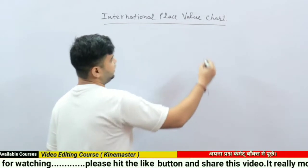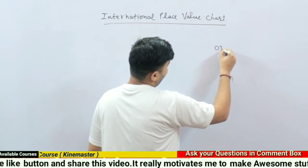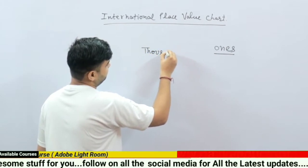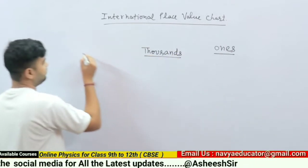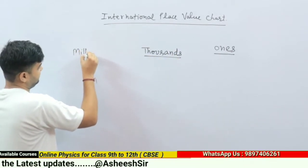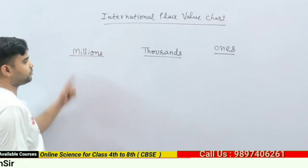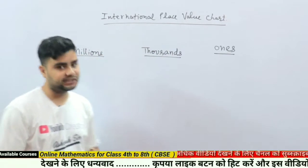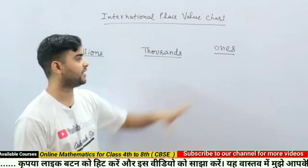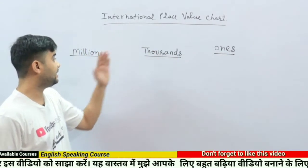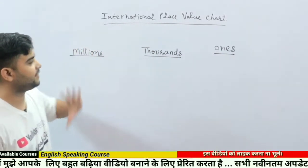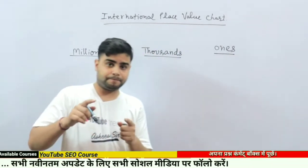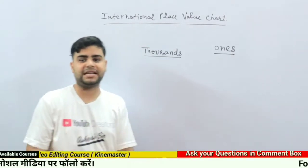In the international place value chart we use ones, thousands, and millions as the main periods. These are the three main periods of the international place value chart. In the Indian place value chart we have ones, thousands, lakhs, and crores, but in international we have only three periods: ones, thousands, and millions.